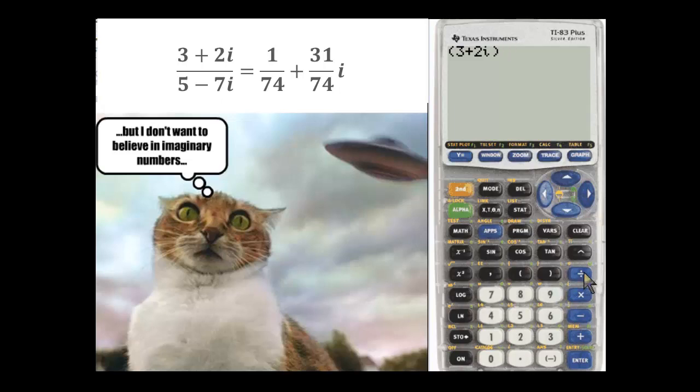And I'm going to divide by parentheses 5 minus 7i, and then close my parentheses.